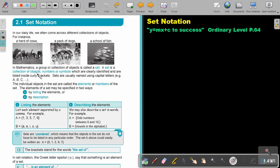A set is a collection of objects, numbers or symbols, which are clearly identified and are listed inside curly brackets. Sets are usually named using capital letters, for example, ABC.